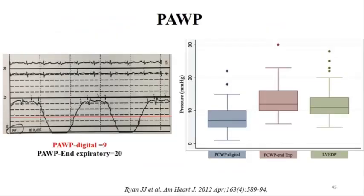Another case: a report I received showed mean pulmonary artery pressure of 9, but looking at the tracing, the end-expiratory pulmonary artery pressure was actually around 20, not 9. That patient was an HFpEF case. Measuring pulmonary artery pressure at end-expiration gives more accurate numbers approximating LVEDP. Be careful not to overestimate either—if the patient holds their breath and strains, the wedge pressure can shoot up. Take measurements in a neutral respiratory position.